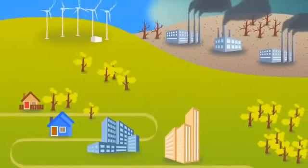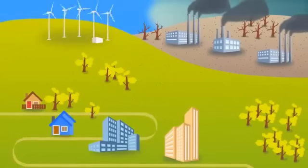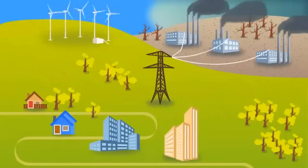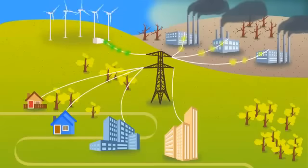That process involves a set of transmission lines and electrical hardware known as the grid. Power plants produce electricity and place it on the grid. Homes and other buildings pull electricity off the grid.